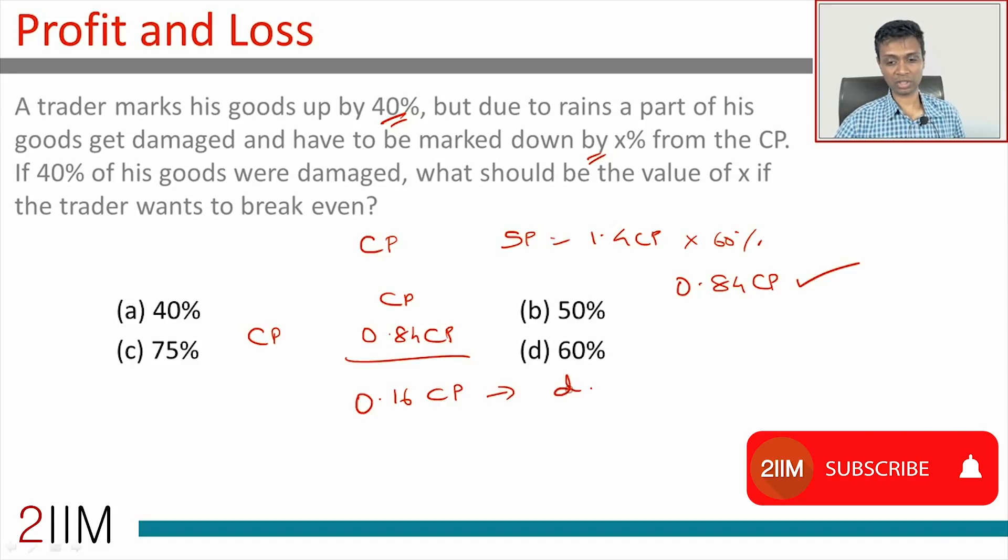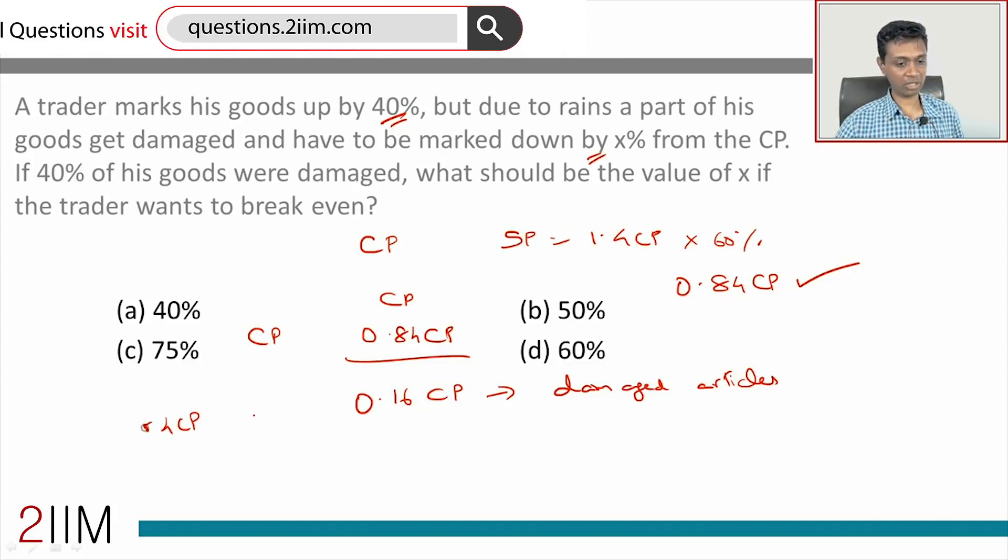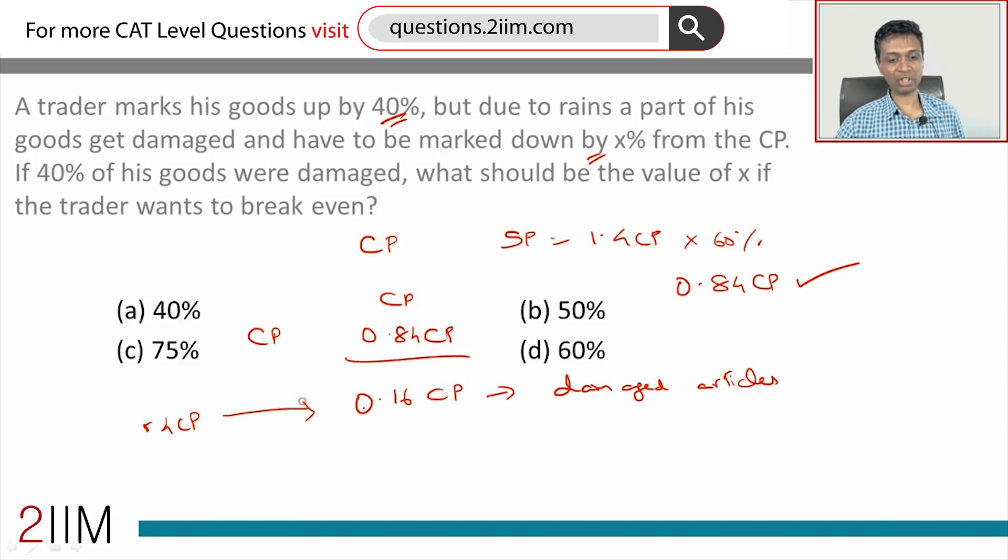This comes from the damaged articles that he is selling. What percentage of his goods were damaged? 40% were damaged. So 0.4 CP worth is damaged, and from this he is generating revenue of 0.16 CP.